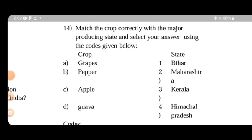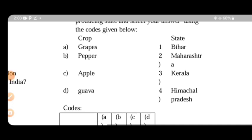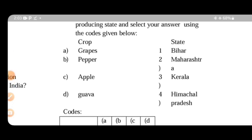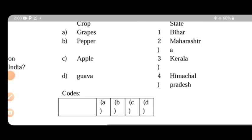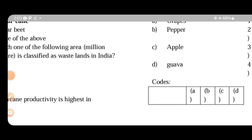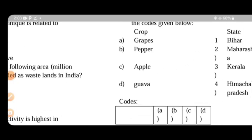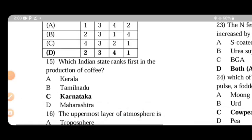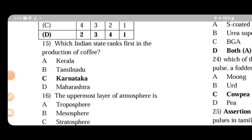Match the crop correctly with the major producing state. Grapes - Maharashtra, Apple - Himachal Pradesh, Areca nut - Karnataka. Next, which Indian state ranks first in the production of coffee? Coffee production is first in Karnataka.